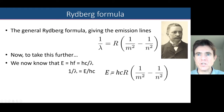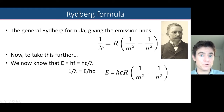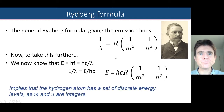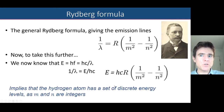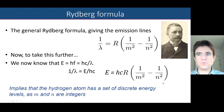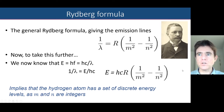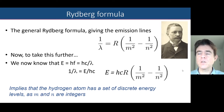And so likewise, the same is true for the energy, just as it was true for the frequencies and the wavelengths. So that implies the hydrogen atom must have a discrete set of energy states, or energy levels, because m and n in this expression are integers. Perhaps it was this that inspired Niels Bohr.